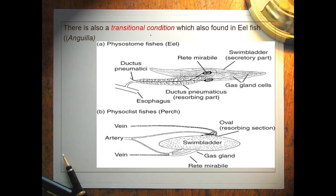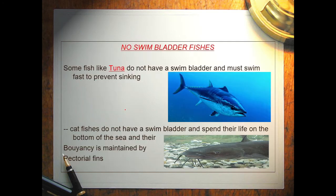There is also a transitional condition which is found in eel fish, Anguilla. The swim bladder of Anguilla has a ductus pneumaticus which is somewhat reduced.